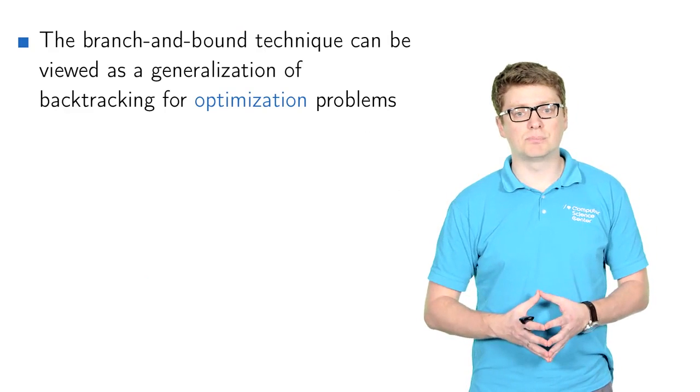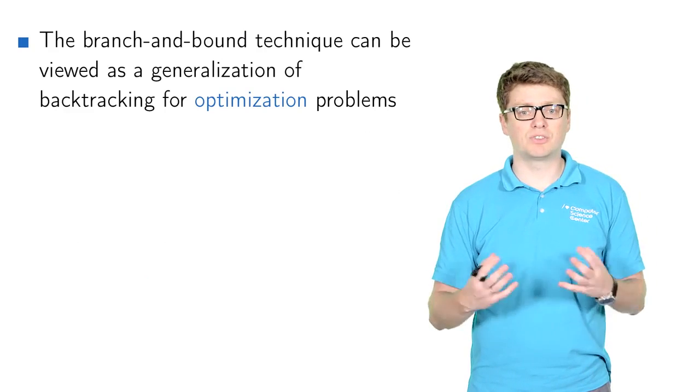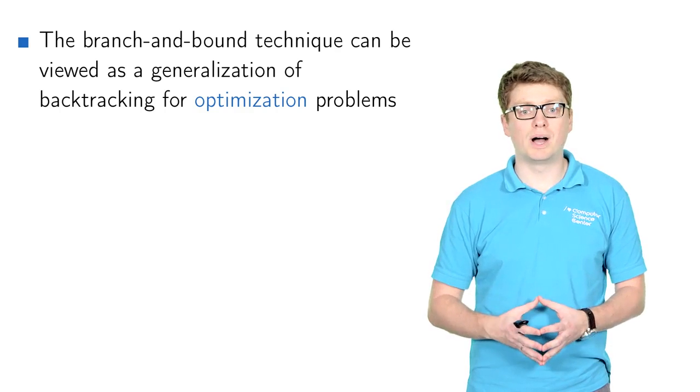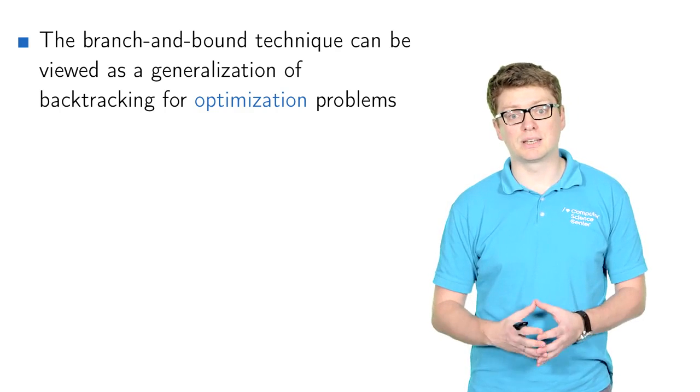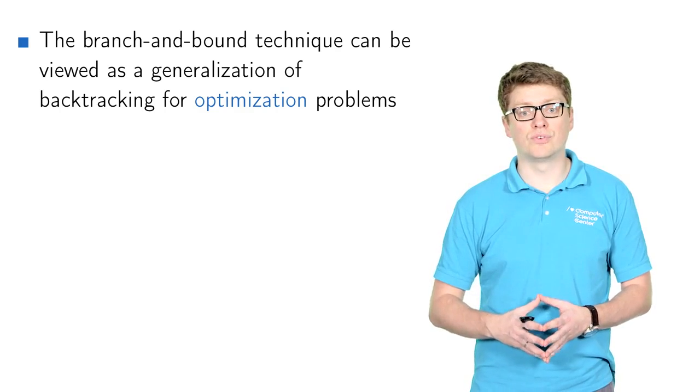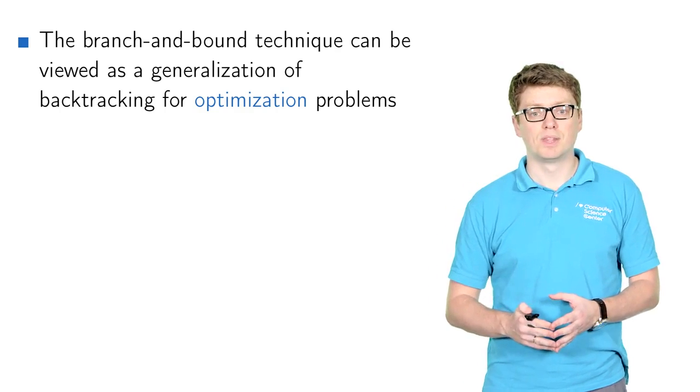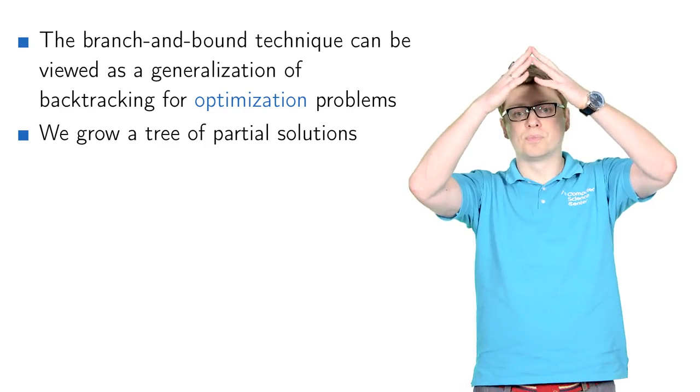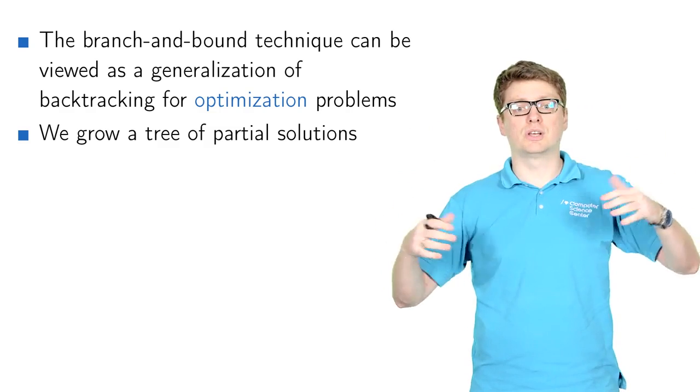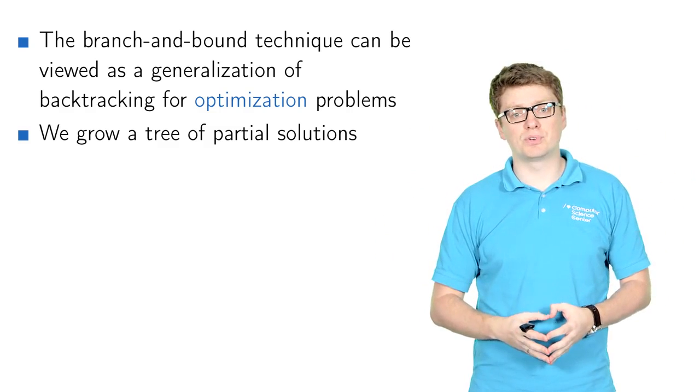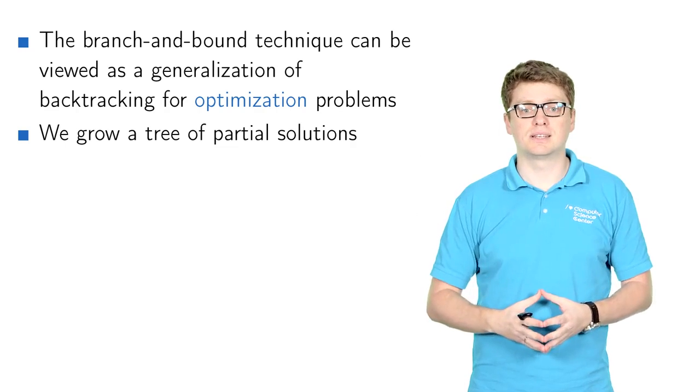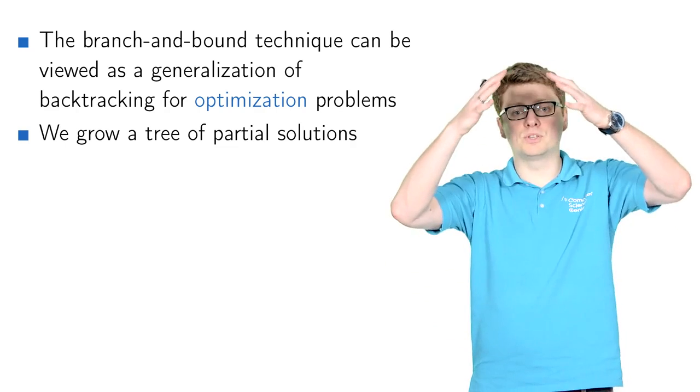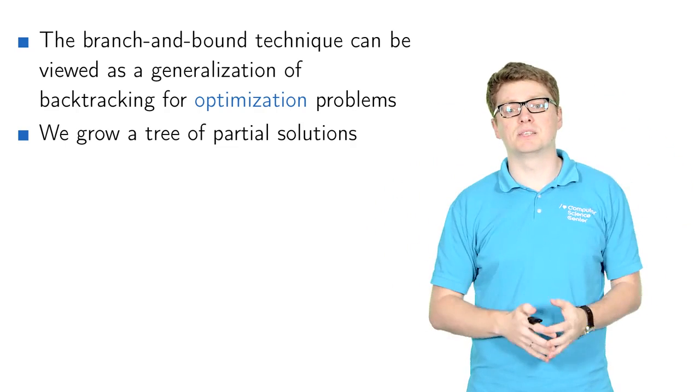It is quite similar actually to the backtracking technique, but backtracking is usually used for solving decision problems, while the branch-and-bound technique is usually used to solve optimization problems. Its main idea is as follows: again we are going to grow a huge tree, which in the end is going to represent the search space, that is the space of all candidate solutions. So we are going to grow these solutions piece by piece.